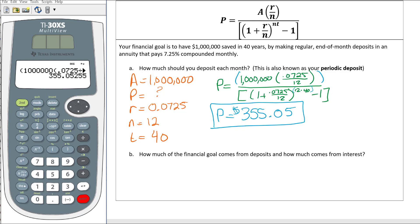Let's see how much of the financial goal comes from deposits and how much comes from interest. Your deposits are going to be the $355.05 times the number of times you do that a year, that's 12, times the number of years you do that.